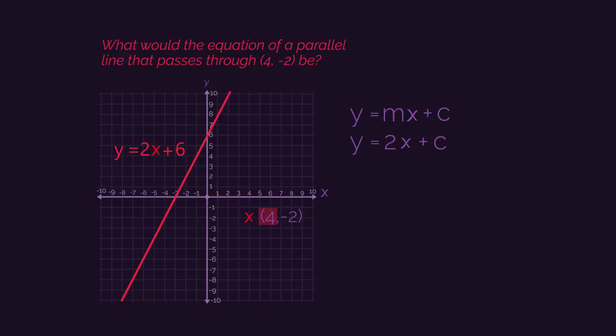So x is 4 and y is negative 2 into the y equals 2x plus c equation. And we get negative 2 equals 2 multiplied by 4 plus c. As negative 2 equals 8 plus c, a little bit of rearranging, and c is negative 10. So the equation of the parallel line is y equals 2x minus 10.